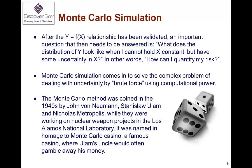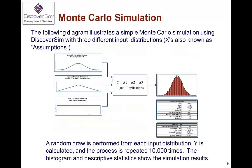Monte Carlo was named after the Monte Carlo Casino. In a simple example with three inputs — a normal distribution, a triangular distribution, and a uniform distribution — the transfer function is just the sum of those three inputs. The Monte Carlo simulation generates random numbers for each input, sums those three numbers to produce an individual output point, and repeats that process several times. The default in DiscoverSim is 10,000 replications, but you can increase or decrease that depending on whether you want a quick or more comprehensive analysis.